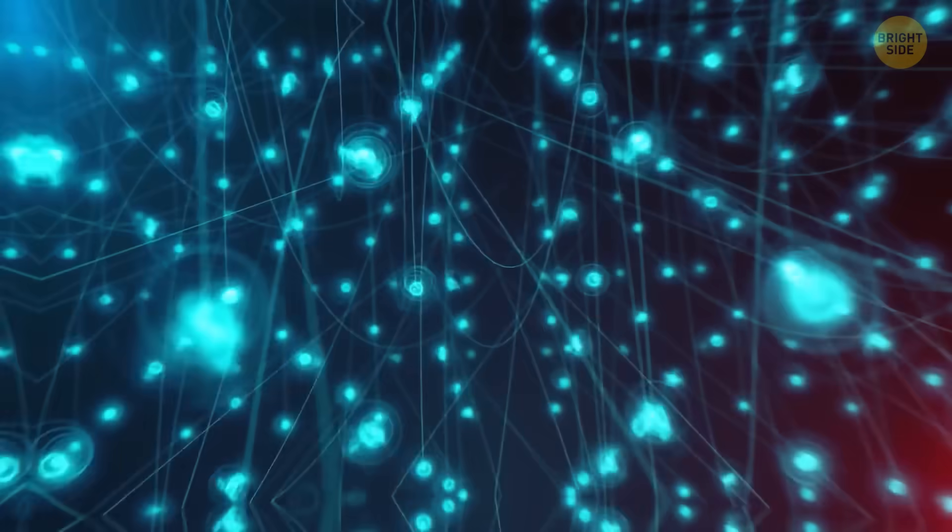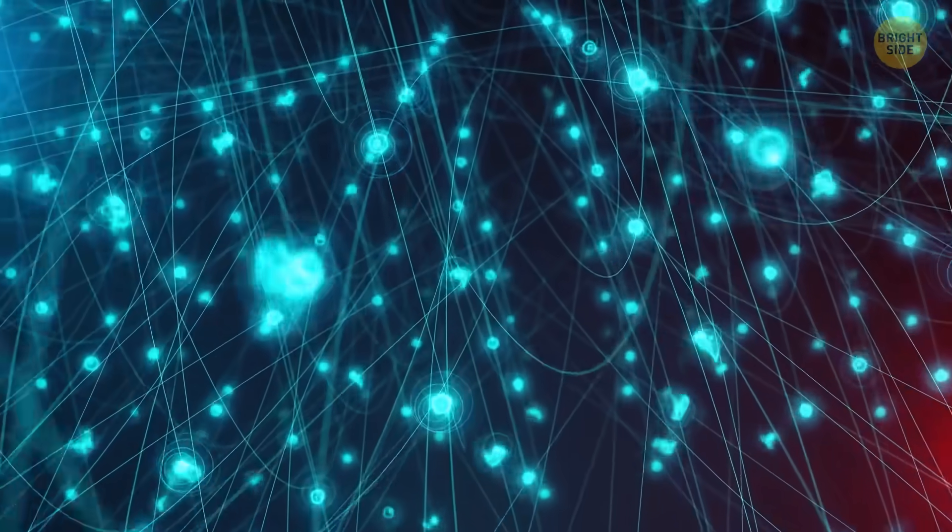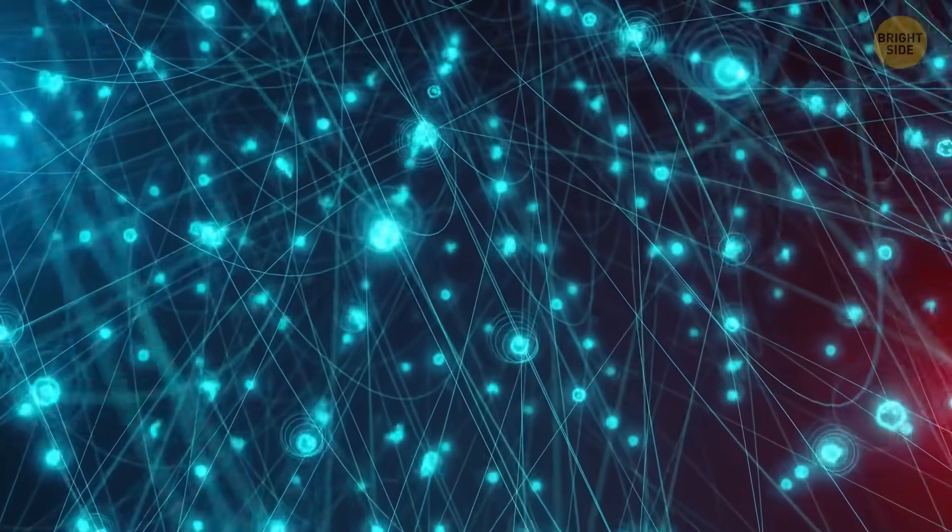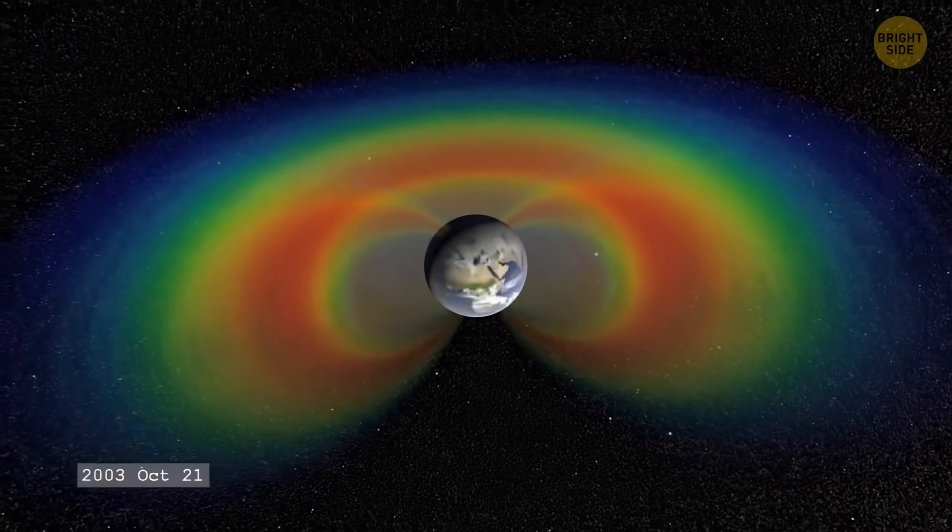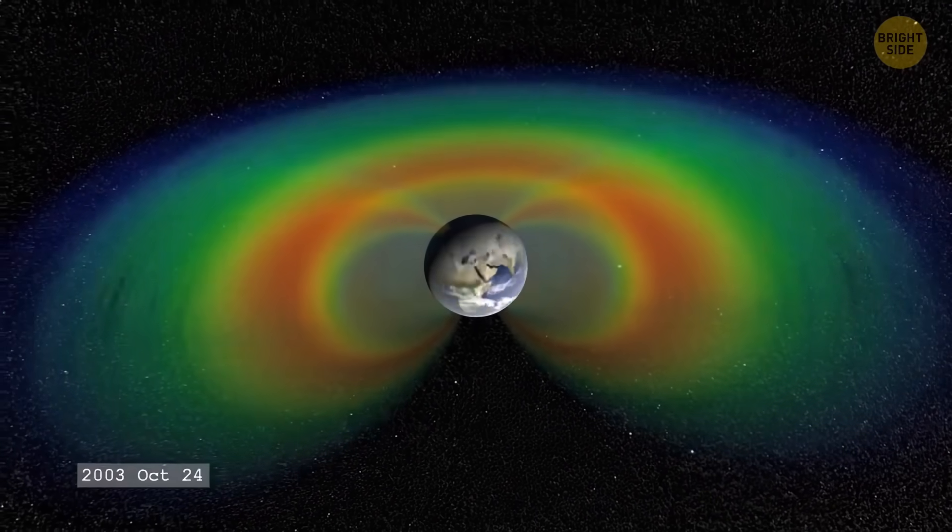They looked at something called proton flux. Basically, it's how many positively charged particles are flying around in Earth's radiation belt. There are two of these belts, shaped like donuts that wrap around Earth, full of particles from the Sun.